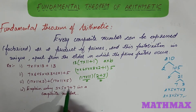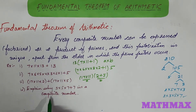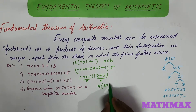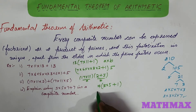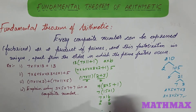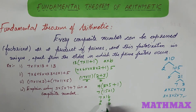Sometimes they may ask: explain why 3 into 5 into 7 plus 7 is a composite number. Here the condition is given — this number is already composite and we need to explain why. We can take out 7 as common: 7 into (3 into 5 plus 1), which gives 7 into (15 plus 1), that is 7 into 16. Calling these A and B, this is in the form A into B.